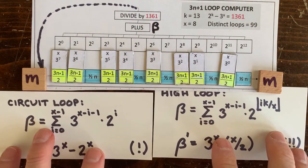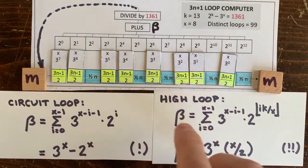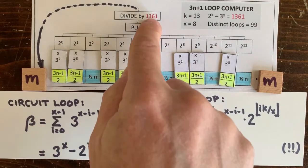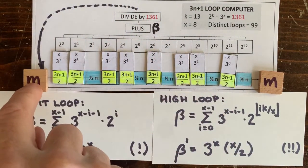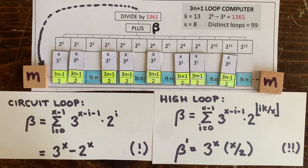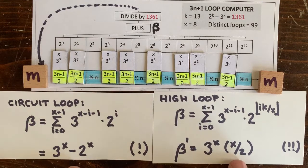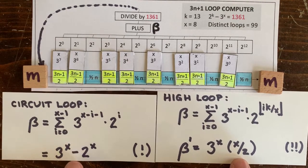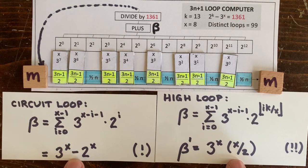Now if we divide beta by 1361, or 2 to the k minus 3 to the x in general, then we get m, which is the lowest member of the high loop. And it's interesting. It's basically only a factor of x higher than the m of the circuit loop.